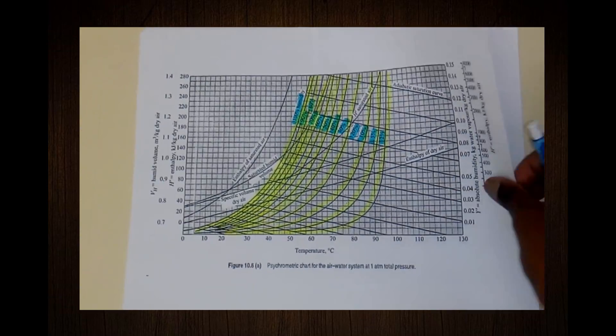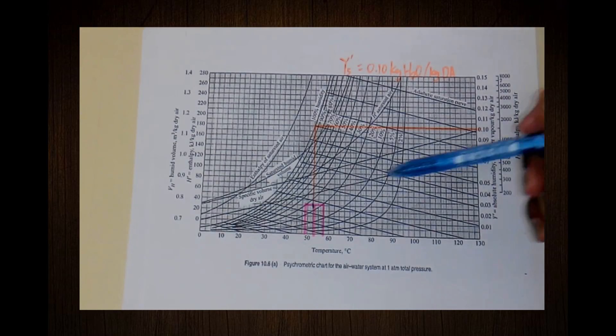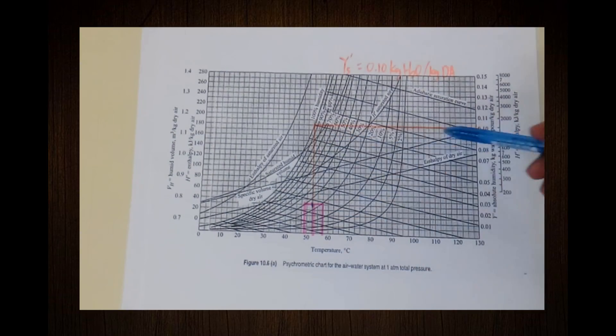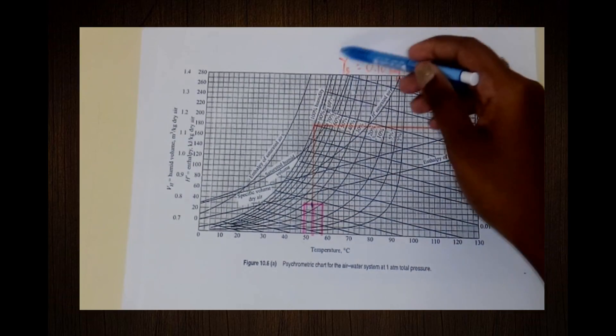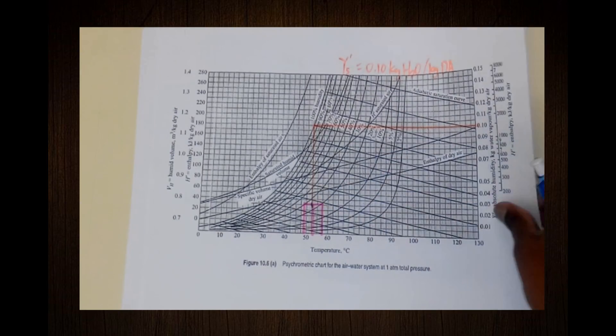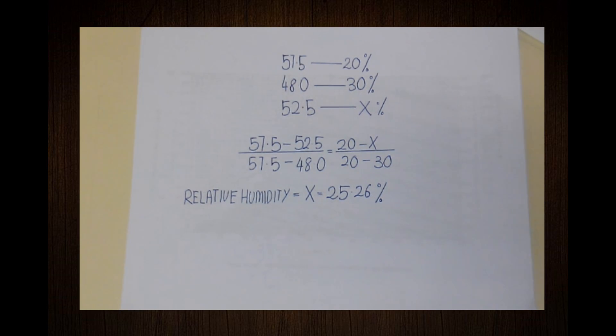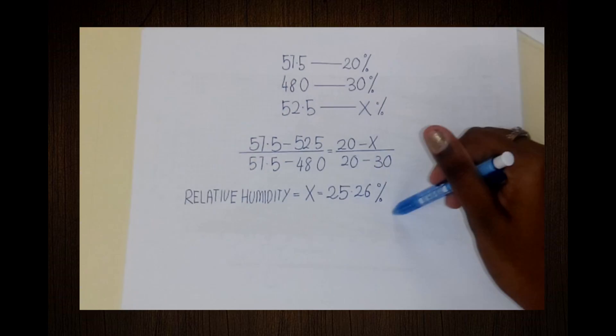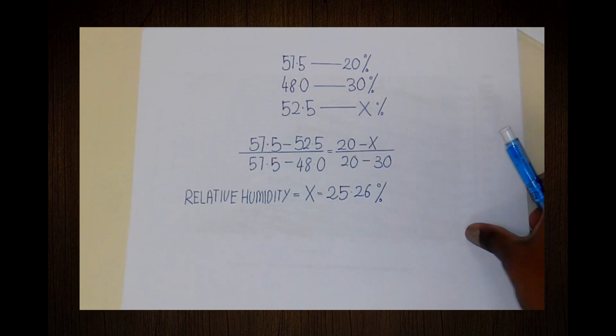We need to know the absolute humidity of saturated air at this temperature. The saturated air humidity is 0.1 kilogram water per kilogram dry air. Since our point is not located on any humidity line, we need to perform interpolation. The relative humidity at this point is estimated at 25.26 percent.